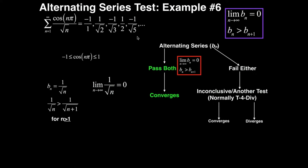One important thing to remember about the cosine function is that the value of any cosine — it doesn't matter what's in the argument, you could have cosine of a million squared over 350π — cosine can only be between negative 1 and 1. So when we look at this series, there's no way the cosine makes it blow up. This part will never make the series blow up, so we look at the other part, which is the square root of n.